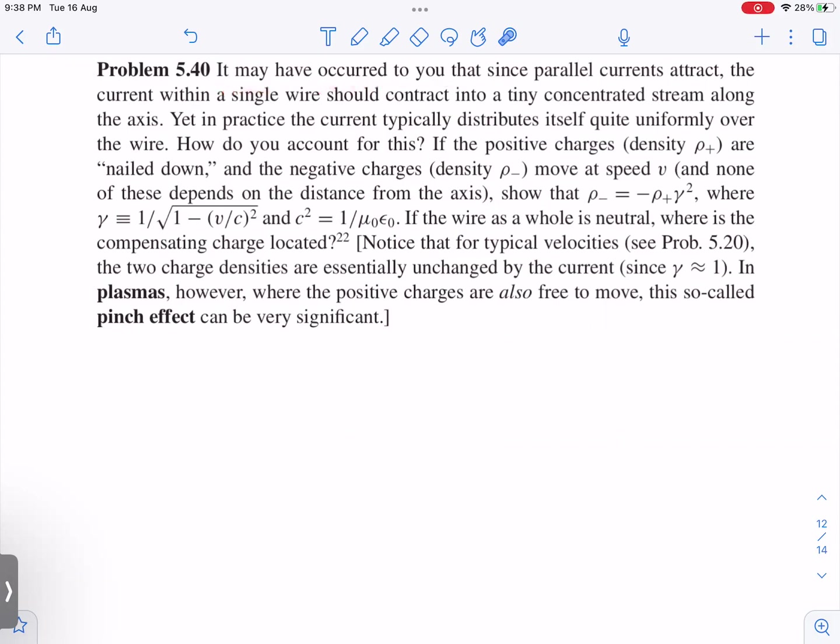The question is: it may have occurred to you that since parallel currents attract, the current within a single wire should contract into a tiny concentrated stream along the axis. Suppose there is a wire and current is flowing like this. If you think of this wire to be made up of many thin, infinitely thin wires, then all of them should attract. Yet in practice, the current typically distributes itself quite uniformly over the wire. How do you account for this?